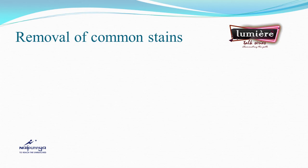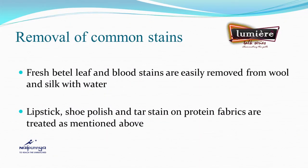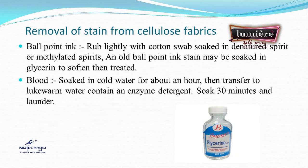Now we look at the removal of common stains from various fabrics. These tips are useful not only for hotel management or hospitality students but for everybody in daily life. Fresh betel leaf and blood stains are easy to remove from wool and silk with water. Lipstick, shoe polish, and tar stains on protein fabrics are treated as mentioned. For cellulose fabrics, ballpoint ink stains: rub lightly with a cotton swab soaked in denatured spirit or methylated spirit.